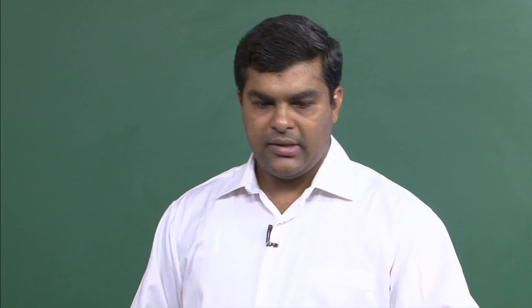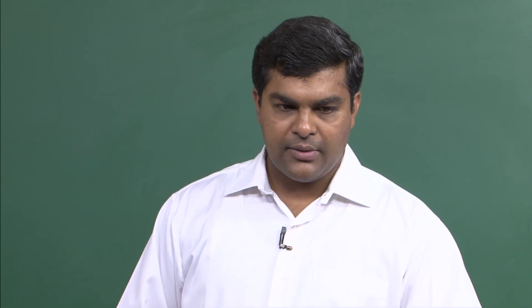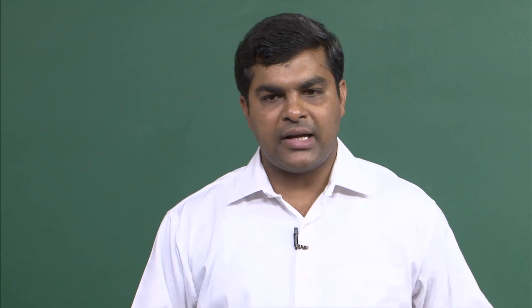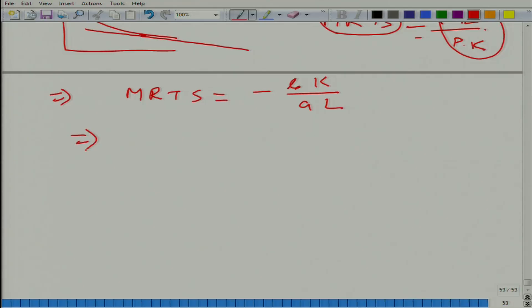Now let us calculate MRTS. We had calculated MRTS for the Cobb-Douglas function — recall that it is minus MPL/MPK, and for Cobb-Douglas we get BK/AL. Can we now calculate the elasticity of substitution? Taking the absolute value, we get BK/AL.